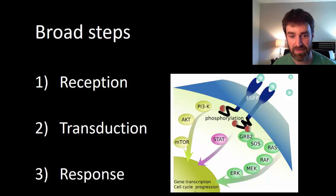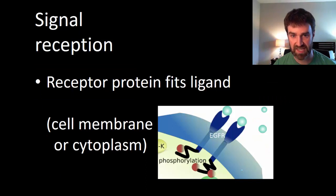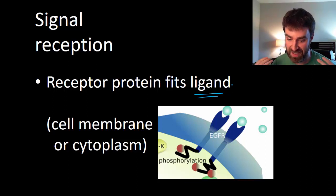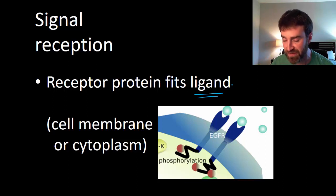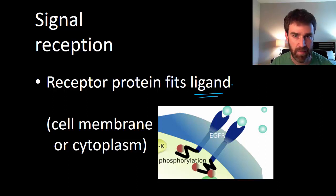The first step of any signaling pathway is that the signal from outside has to be received. There has to be some kind of receptor protein that fits the signal coming from outside. Any signal coming from the environment is called a ligand — often that's a chemical, such as food contacting a bacterial cell, or in a multicellular organism, chemicals released by other cells. For example, adrenaline released throughout the bloodstream might change the behavior of cells around the body.